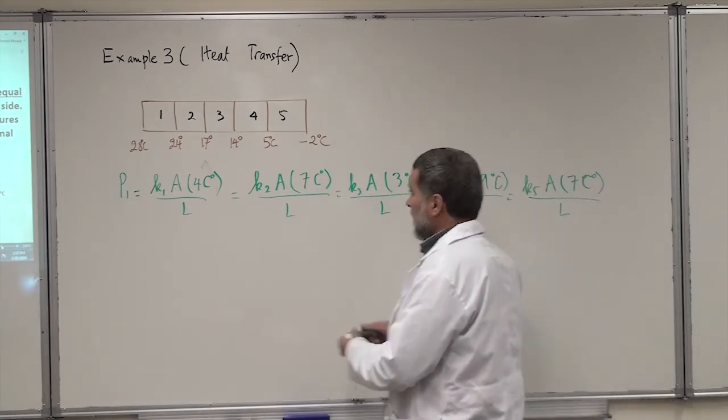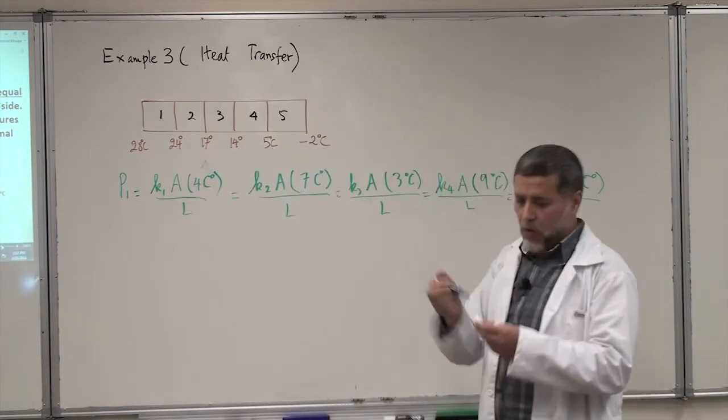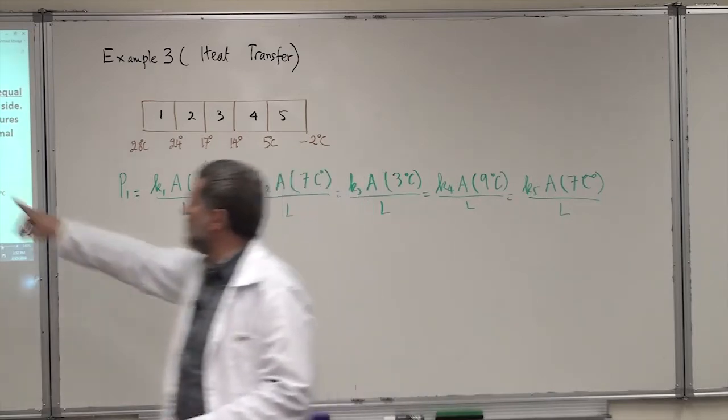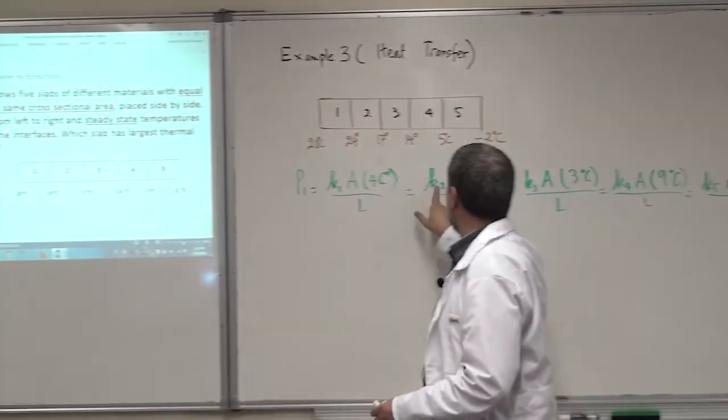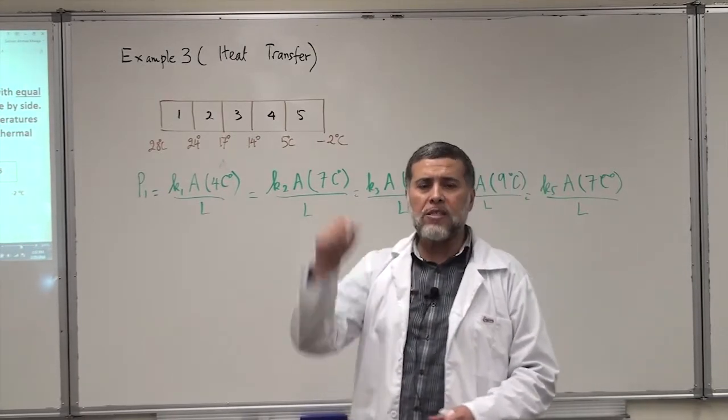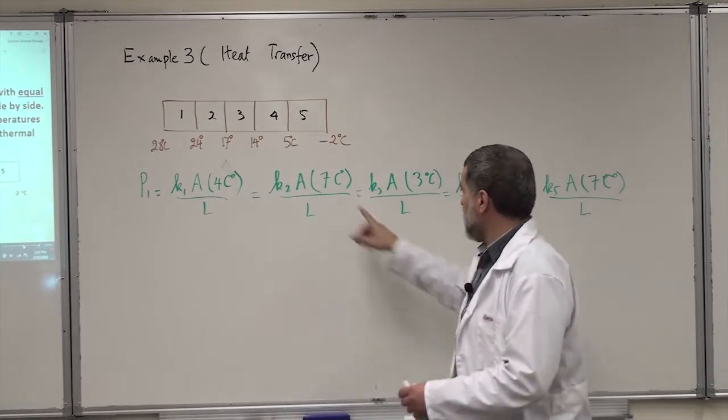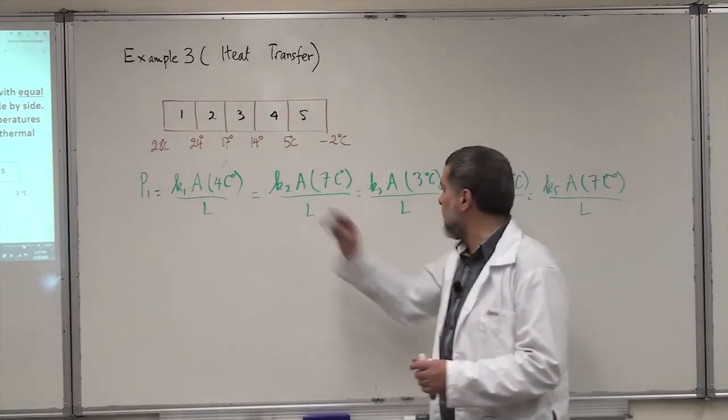Now, notice that L and A are the same in all of them, and what do you think will be the answer? He's asking about the largest thermal conductivity. Of course, if these two, all of them are equal, the lowest delta T will give me the highest K, because the product should be the same in all of them.